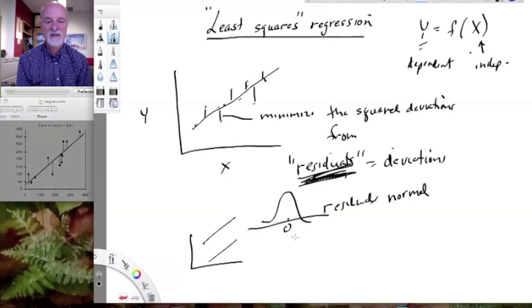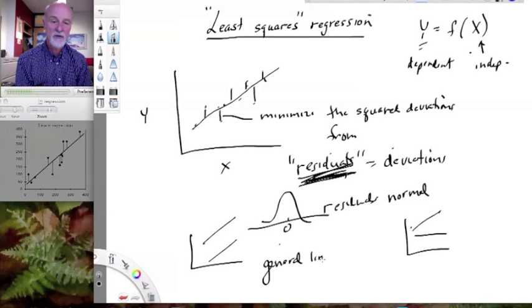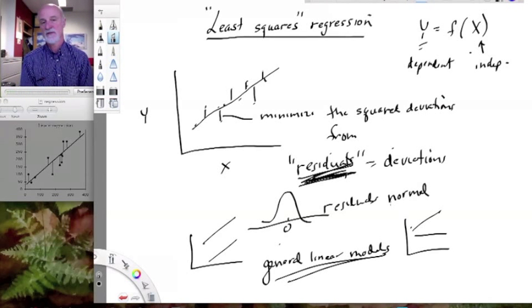Above and below the line, our distribution of residuals will be normal. Once we can make that kind of assumption, we can make comparisons of different lines. We could compare lines and ask whether they have different elevations or different slopes. All the while, making the assumptions of our general linear models, just like we did with ANOVA. Philosophically, we can treat regression very much like ANOVA.